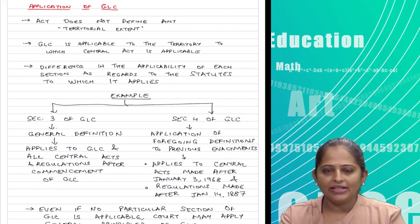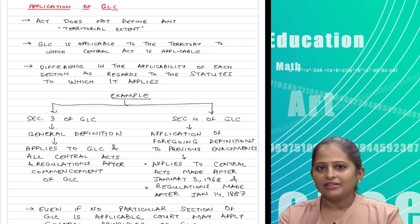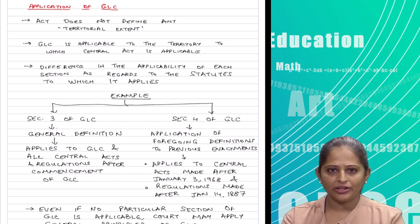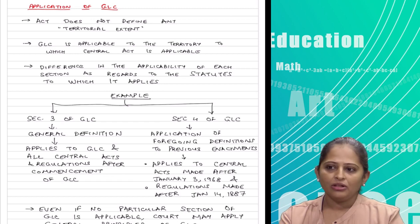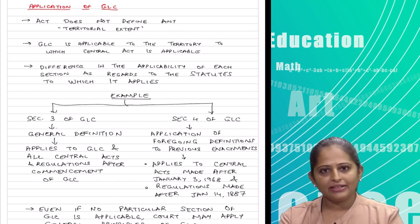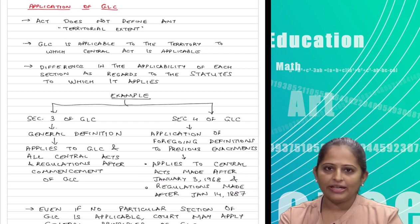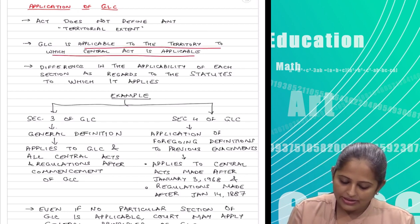If you see most acts, every act would start with a clause saying the act is applicable to so and so area. But in the General Clauses Act, there is nothing given as to territorial extent, because the General Clauses Act is not defining anything per se — it is a generic act assisting the other acts. So it will be applicable to the territory to which the particular Central Act is applicable. There is no territorial extent given in the General Clauses Act itself.